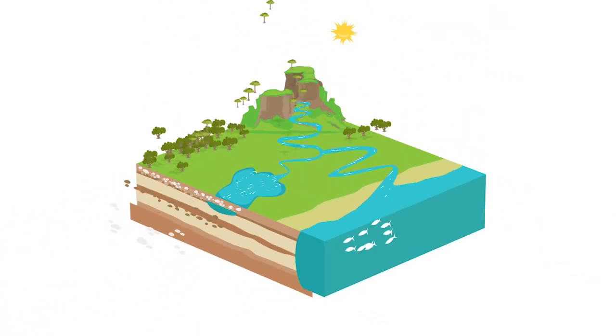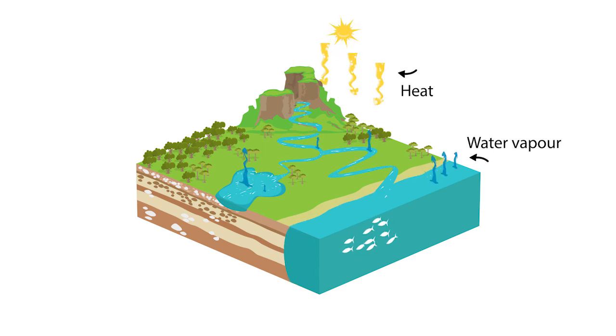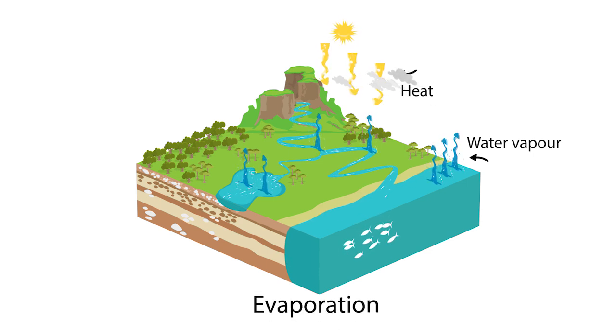The cycle uses physical processes to move water from the surface of the earth to the atmosphere and back again. When the sun shines on oceans, lakes and rivers, it heats the water, turning it into a gas called water vapour which rises into the air. This is called evaporation.